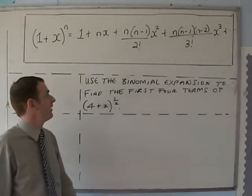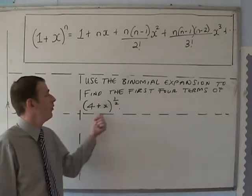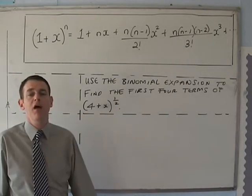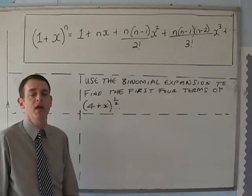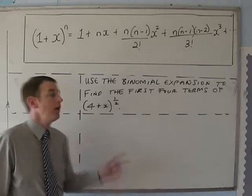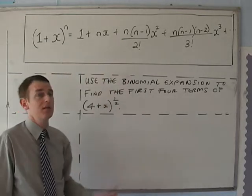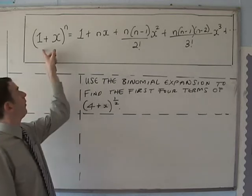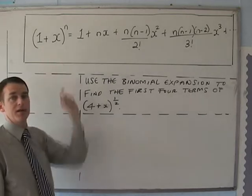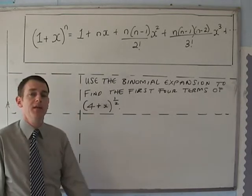Use the binomial expansion to find the first four terms of (4 + x)^(1/2). Now we've got a problem here because the binomial formula only tells us what happens if we've got 1 + x, not if we've got 4 + x.